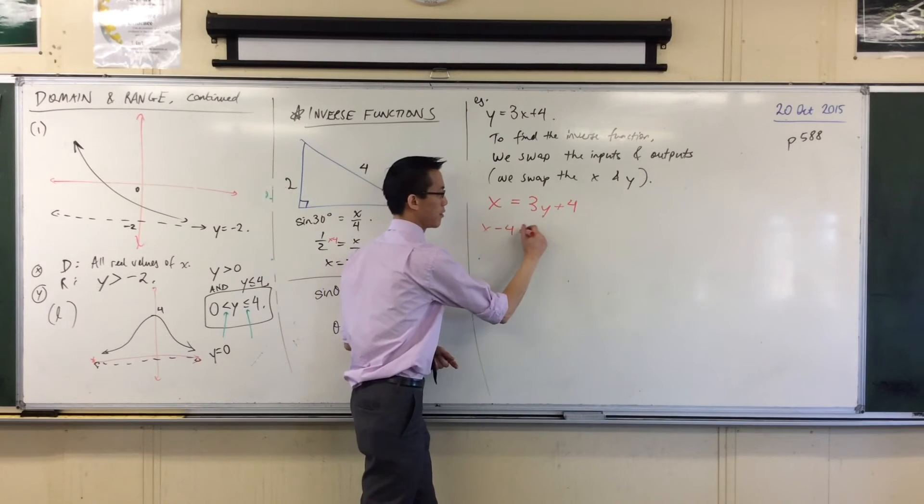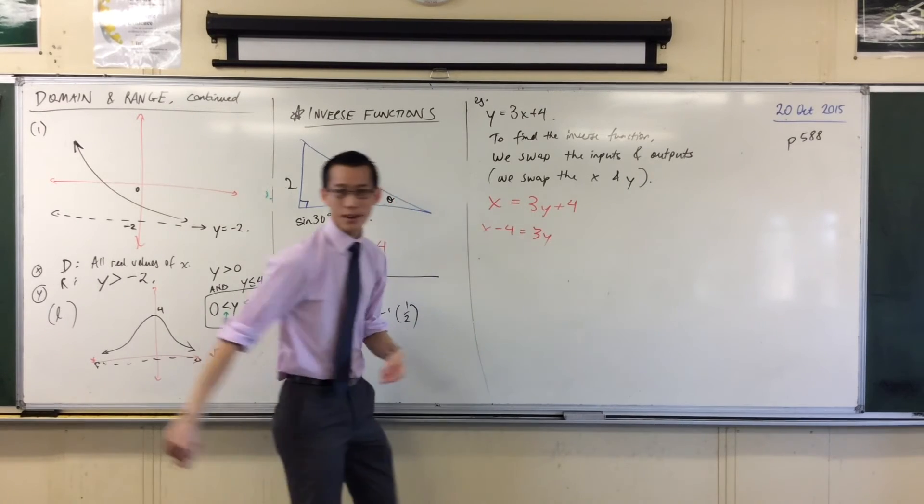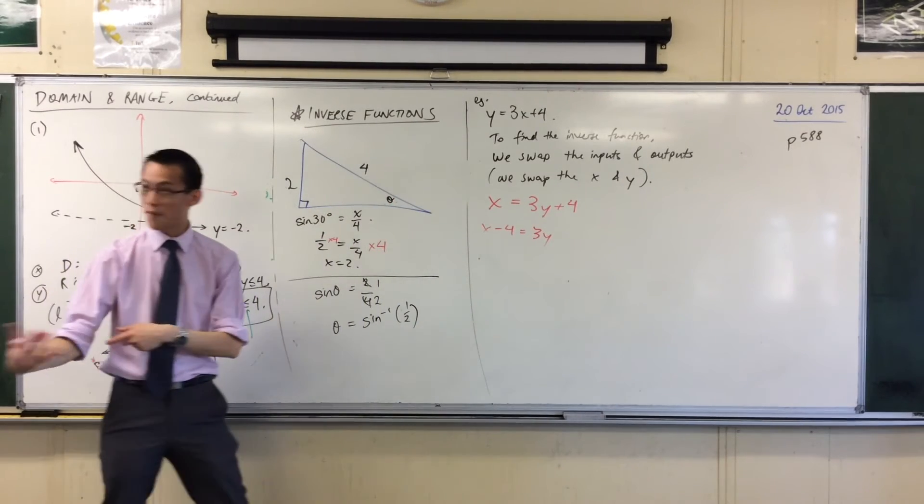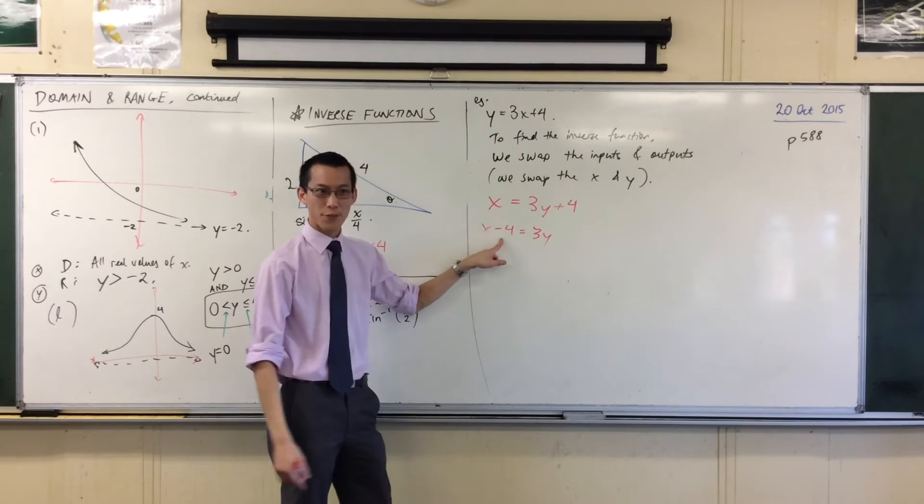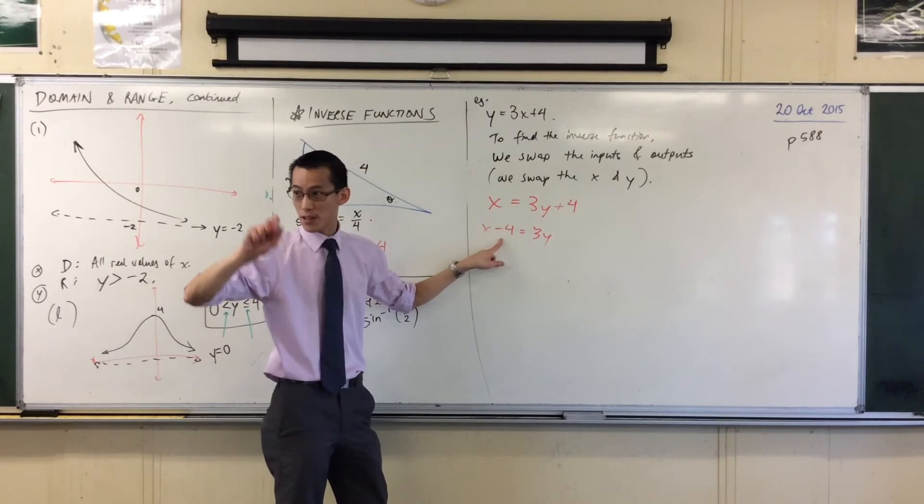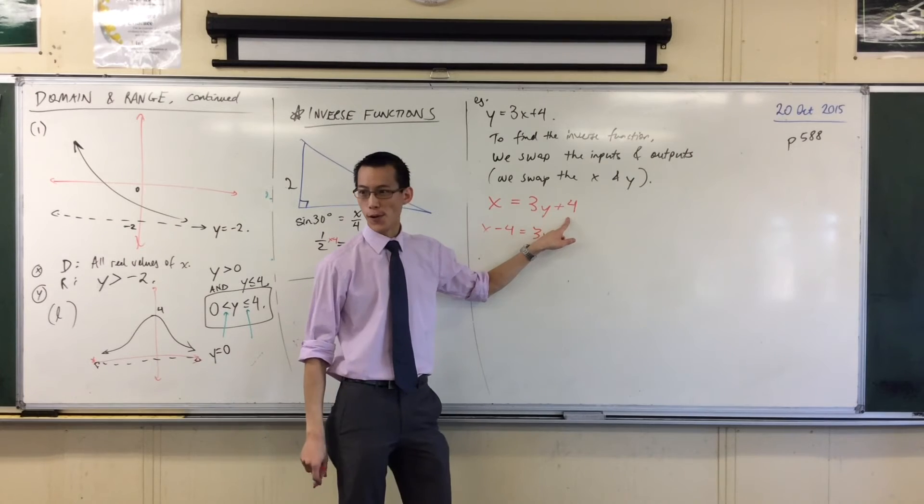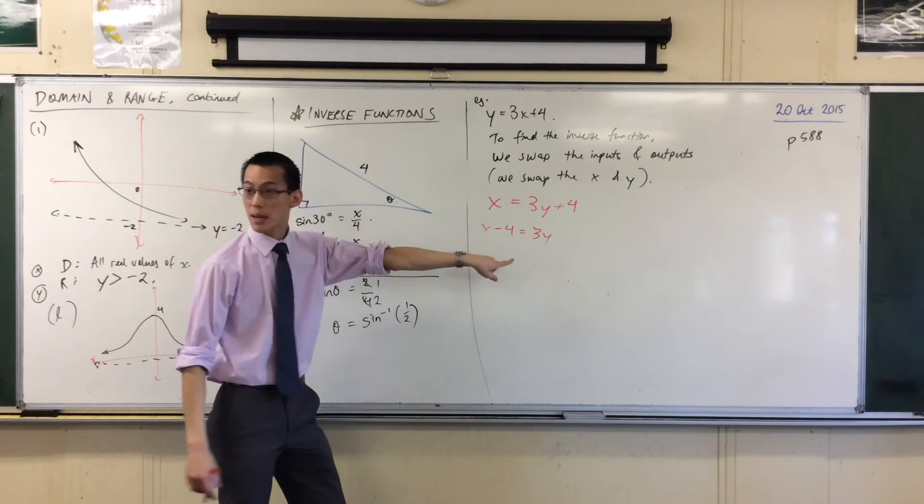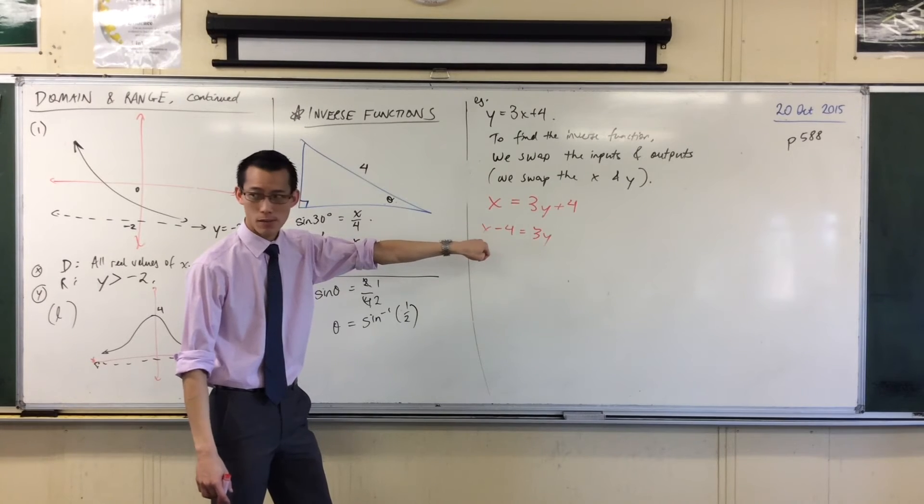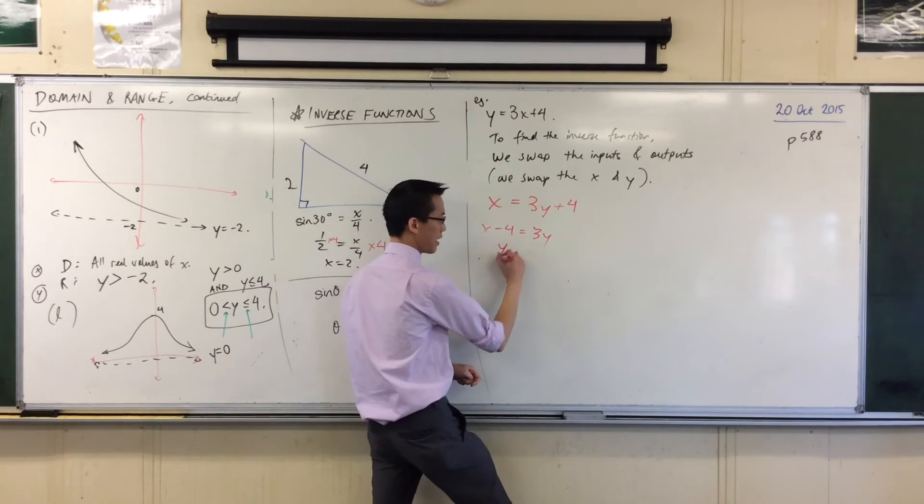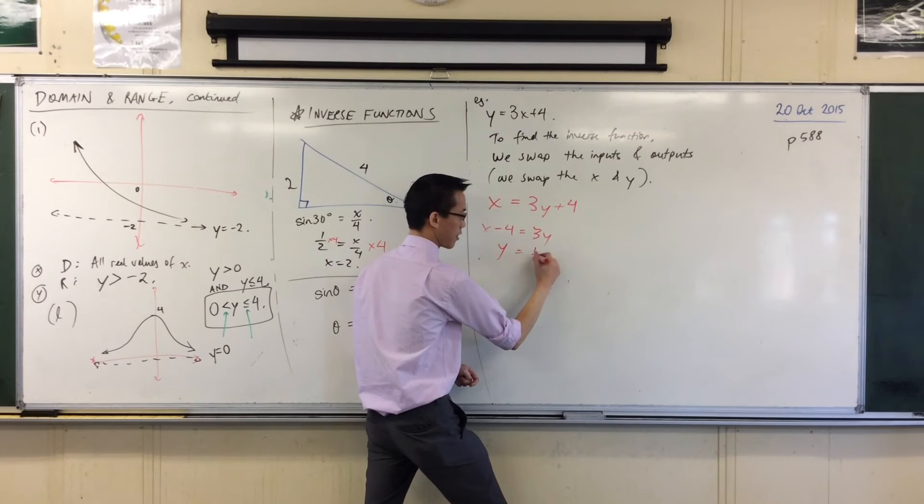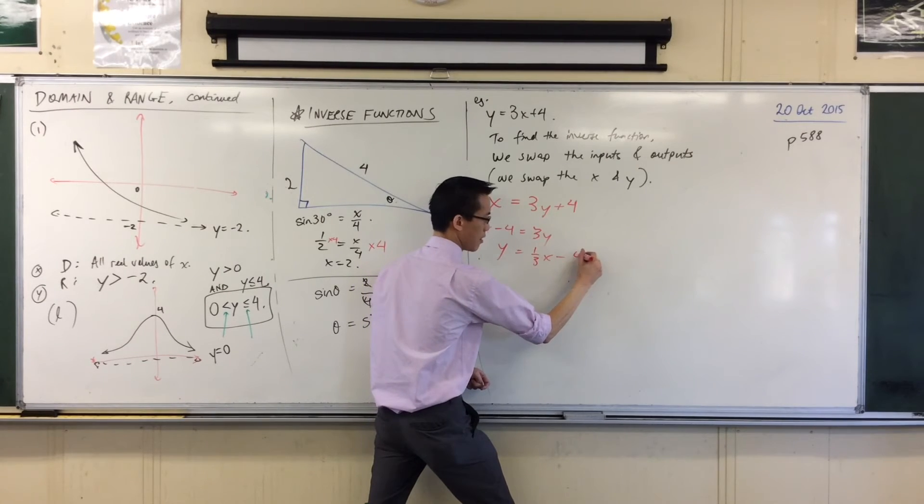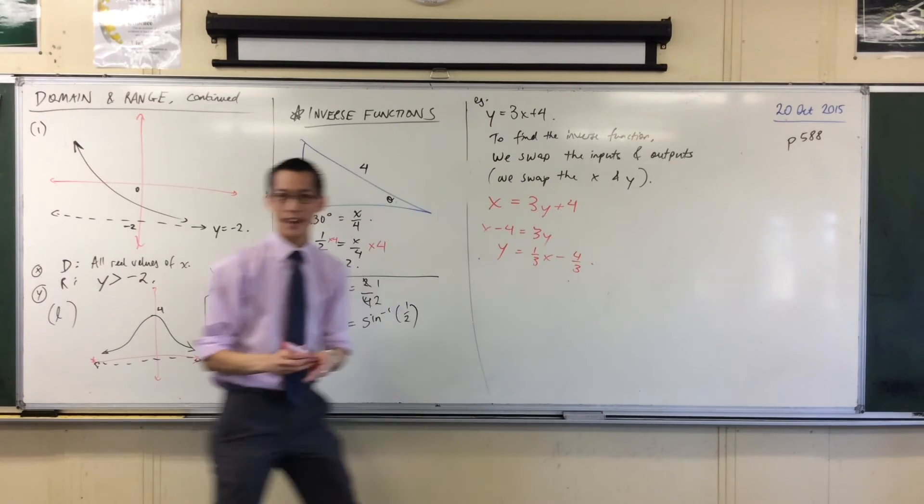I'll take away 4 from both sides. By the way, the reason I take away 4 is because subtracting 4 is the inverse function of adding 4. Functions inversely. I'm only one step away. What do I do to make y the subject? Divide by 3. Divide by 3. I'll do that in one here and divide over here. So, I'm going to get a third x minus 4 thirds.